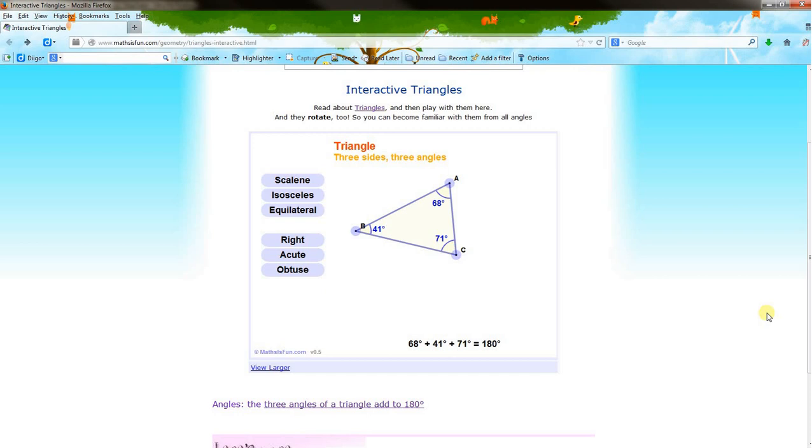An equilateral triangle means that all sides are congruent. All the sides are the same length.